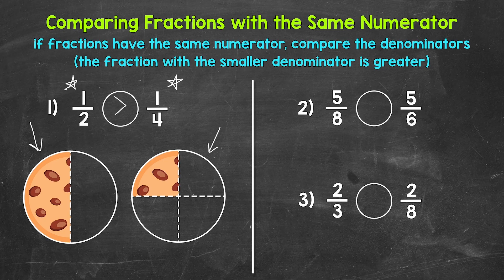Let's move on to number two, where we have five eighths and five sixths. Reading this from left to right, we have: five eighths is greater than, less than, or equal to five sixths. We have the same numerator — five — so we can just compare the denominators. We are looking at five parts out of eight, five eighths, and five parts out of six, five sixths.